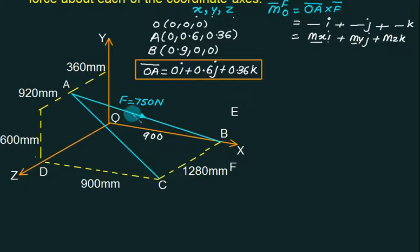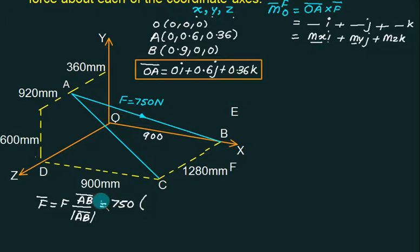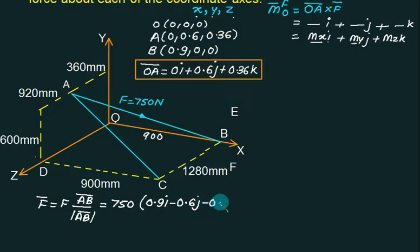The direction of F̄ goes from A to B. So we write F̄ = 750 × (AB̄ / |AB̄|). AB̄ = B − A = (0.9)I + (−0.6)J + (−0.36)K. The magnitude is the square root of (0.9² + 0.6² + 0.36²), giving a denominator of approximately 1.1, so the scalar factor is 750/1.1 ≈ 657.89.